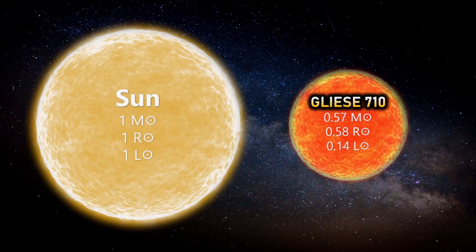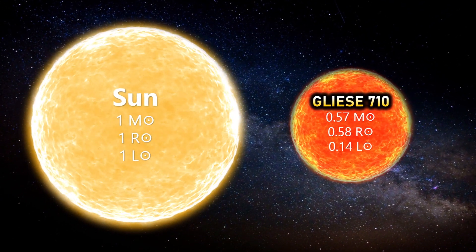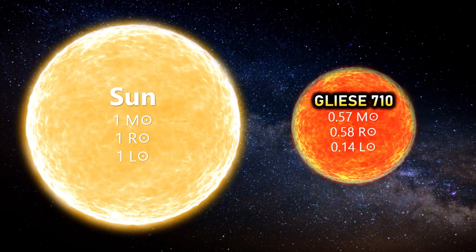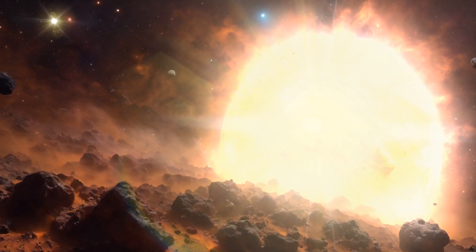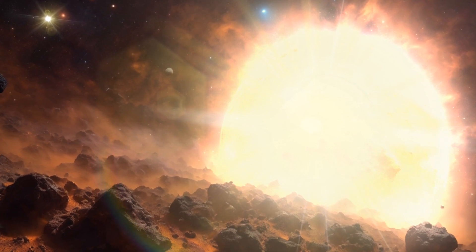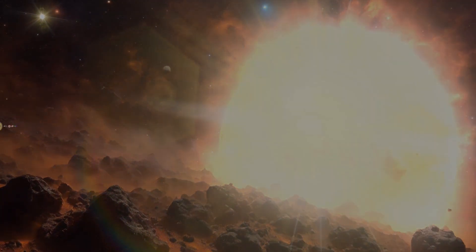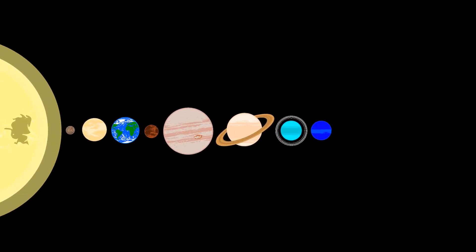Indeed, Gliese 710 contains about 57% of the Sun's mass, and an estimated 58% of its radius. As of the most recent data available in 2020, no planets have been detected in orbit around Gliese 710, and it's important also to note that our system is going to close past by theirs.